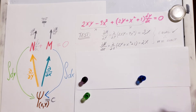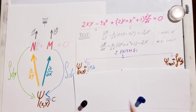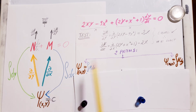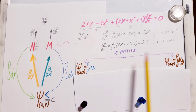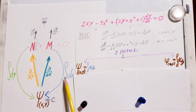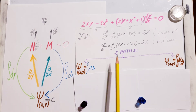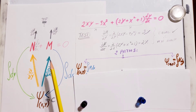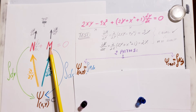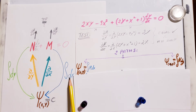Now we can finally explain what all these arrows mean. After the test we have two paths. I'm going to follow the path where I take an integral of my M with respect to x to get my parent function.